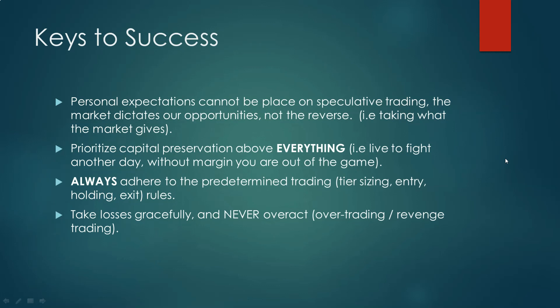It's very important that you pay attention to what I believe are the keys to success. To be successful you must adhere to these four rules — any deviation is a recipe for destruction. First, personal expectations must be eliminated: you cannot place personal expectations on the market when speculating because the market tells us what our opportunities are. Second, prioritize capital preservation — we must ensure we don't blow up our capital. Fourth, you must adhere to the predetermined rules relating to tier sizing, entry, holding, and exit; deviating will jeopardize your ability to be consistent.